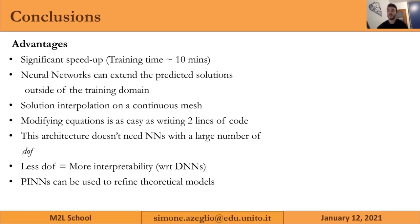In conclusion, the main advantages of this approach are: a significant speed-up — from four to six hours down to 10 minutes training time with nearly immediate evaluation; the ability to predict solutions outside the training domain; and the ability to interpolate the solution on a continuous mesh, unlike discretized numerical solutions. Changing the modeled equation — in this case the level set equation — requires only rewriting two lines of code, thanks to Julia's high-level structure.